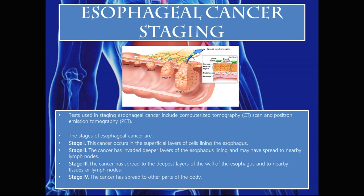Esophageal cancer staging: Tests used in staging include CT and PET scans. Stage 1: cancer occurs in the superficial layers of the cells lining the esophagus. Stage 2: the cancer has invaded deeper layers and may have spread to nearby lymph nodes. Stage 3: the cancer has spread to the deepest layers of the esophageal wall and to nearby tissues or lymph nodes. Stage 4: the cancer has spread to other parts of the body.